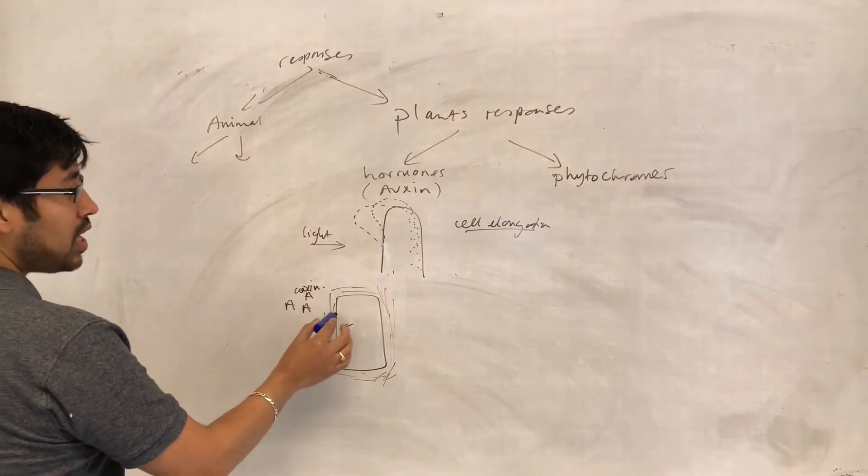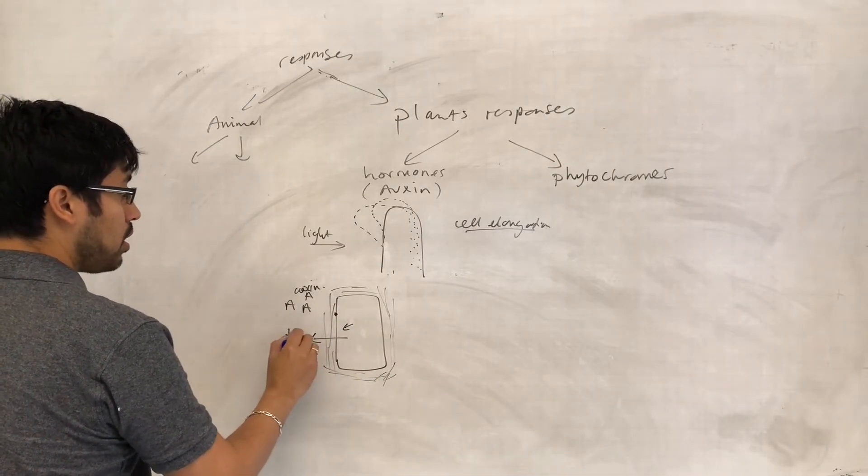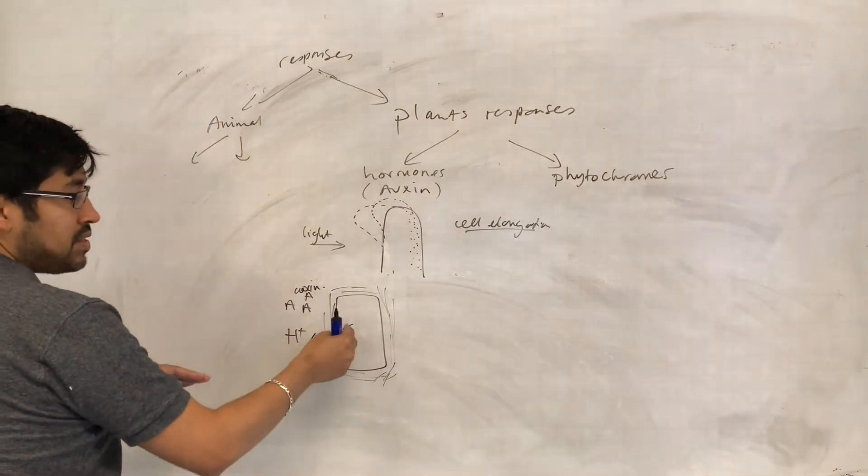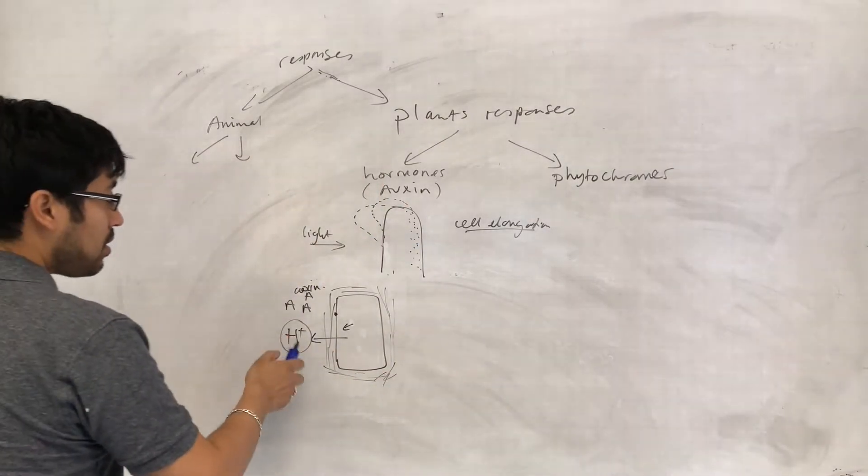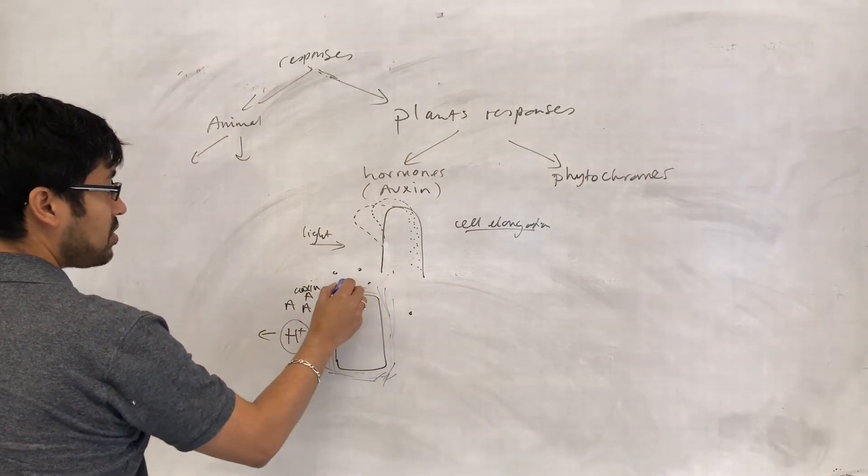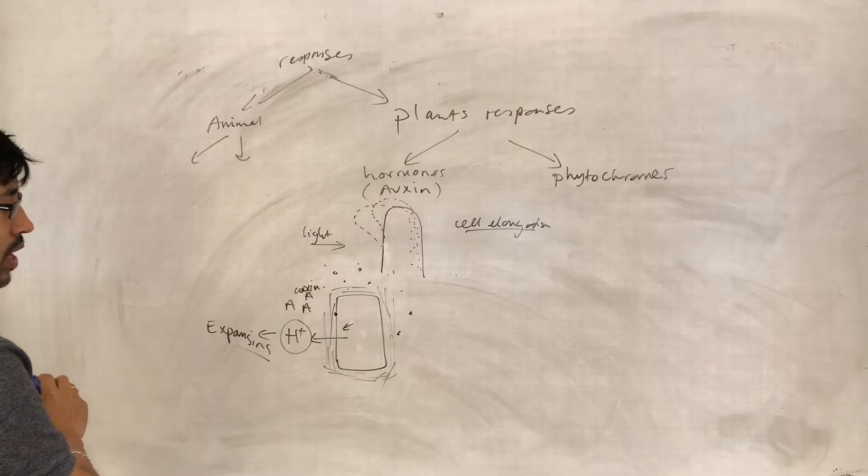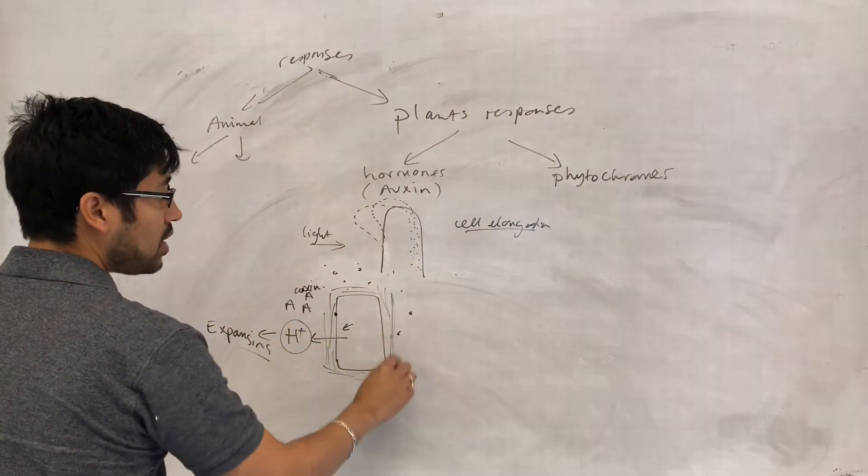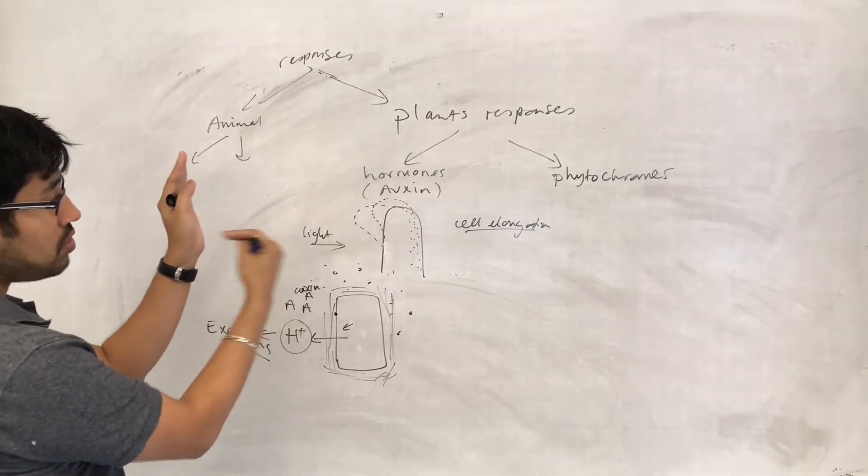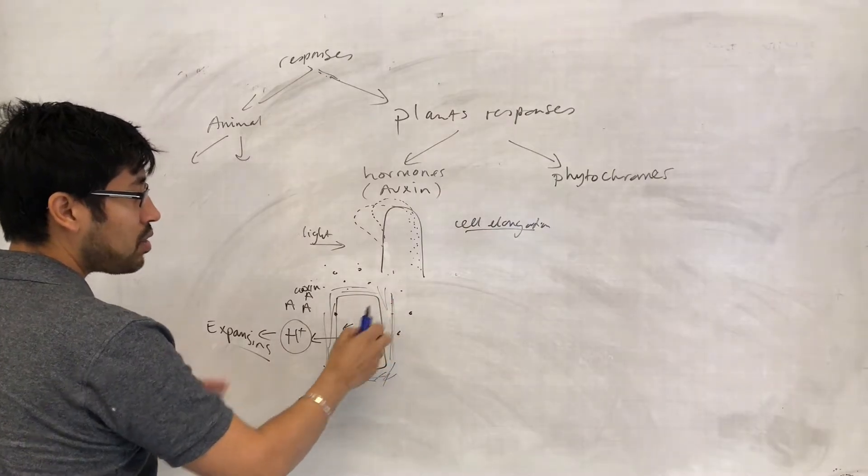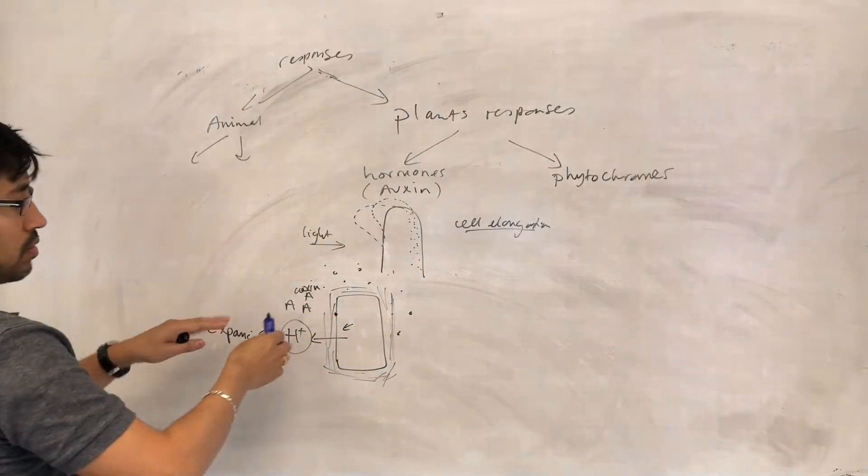But the cell responds when the cell membrane detects auxin, then the cell responds by increasing the activity of proton pumps. Now that means that the cell starts to pump out more protons into the cell wall which surrounds it. And the protons activate proteins that are extracellular and kind of just sitting around, called expansins. And when these expansins are active, what they do is they break the crosslinks that are holding the cellulose microfibrils together. So whatever's holding the cellulose molecules together, these crosslinks, the expansins are actually breaking them down, allowing the cellulose molecules to kind of slide against each other a little bit. That on its own is not enough.